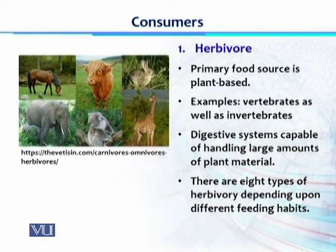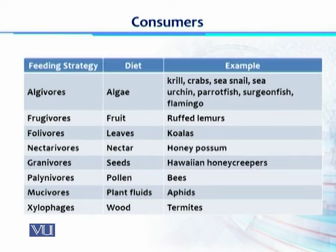Herbivores can be further divided into eight different types depending on their feeding habits. Algivores feed on algae — krill and crabs are examples. Frugivores feed on fruits — lemurs are one example. Folivores feed on leaves — for example, koalas. Nectarivores feed on nectar — honey opossums and hummingbirds are examples.